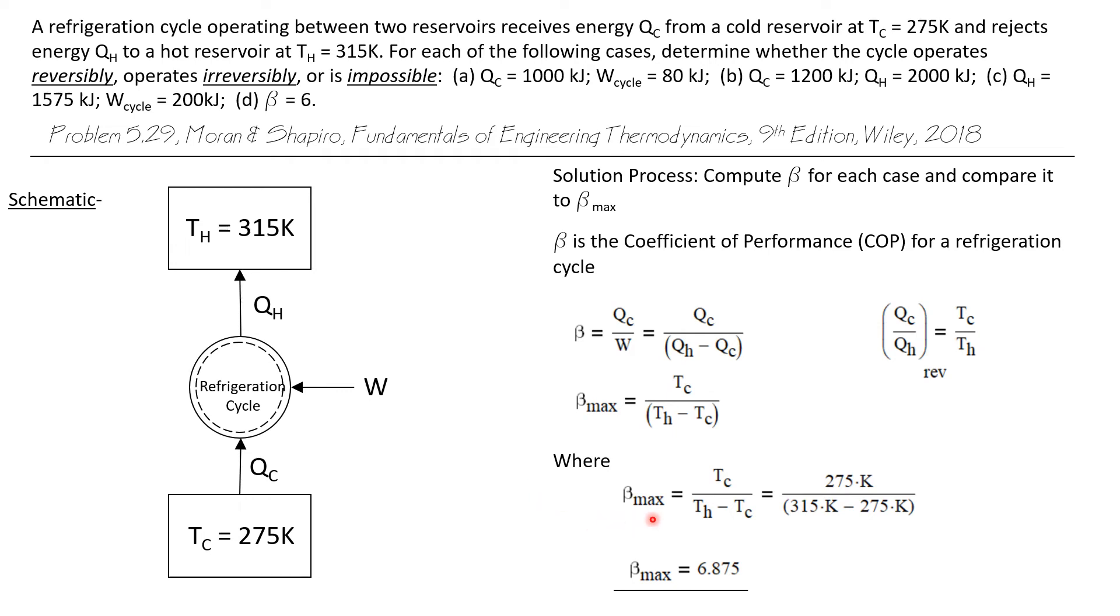Now we can calculate that because we have the thermal reservoir temperatures already in absolute temperatures, degrees Kelvin. We calculate that beta max for a refrigeration cycle operating between these thermal reservoirs is 6.875.